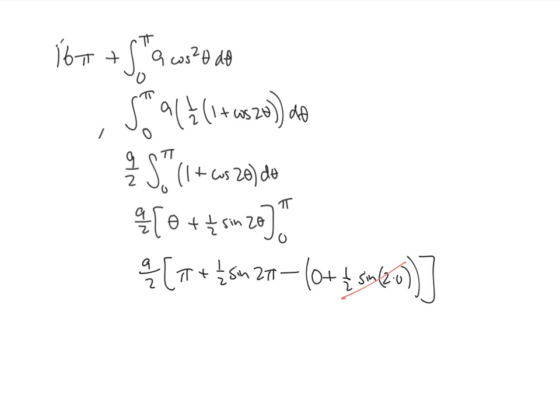Now sine of 0 is 0, sine of 2π is 0, so that's just nine-halves π. 9π over 2.